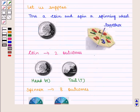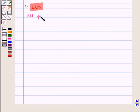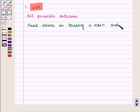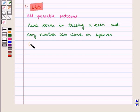Now we will describe this event of tossing a coin and spinning a wheel together with the help of a list. Now we list all possible outcomes, that is if head comes in tossing a coin and any number can come on spinner. So we have outcomes H1, H2, H3, H4, H5, H6, H7 and H8.